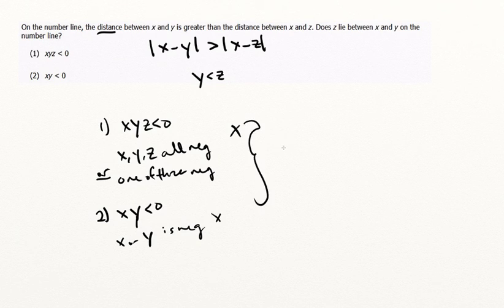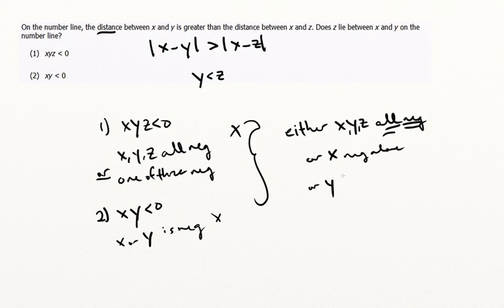We put them together and analyze for c. We've got potentially either xyz are all negative together to make the entire thing negative, or z is negative alone, or y.